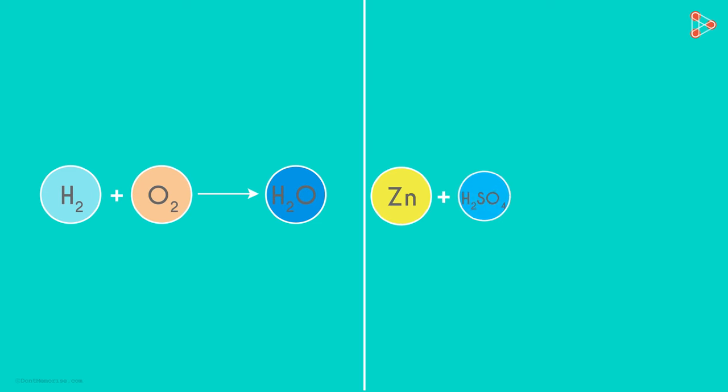In the previous part of the video, we had seen that Hydrogen and Oxygen react to form water. Let's talk about another chemical equation. Zinc reacts with Sulphuric acid to give us Zinc Sulphate and Hydrogen.